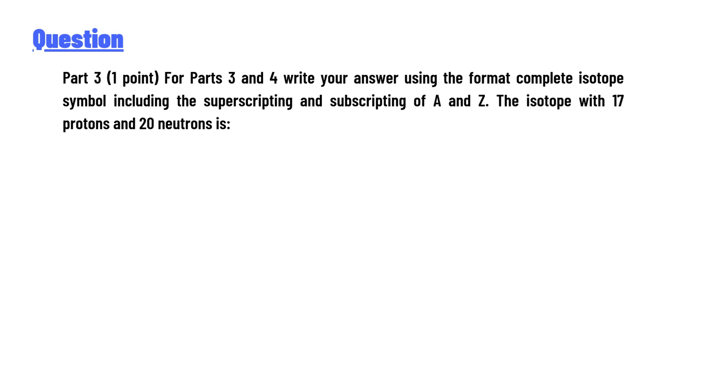Part 3, 1 point. For Parts 3 and 4, write your answers using the format complete isotope symbol including the superscripting and subscripting of A and Z. The isotope with 17 protons and 20 neutrons is...